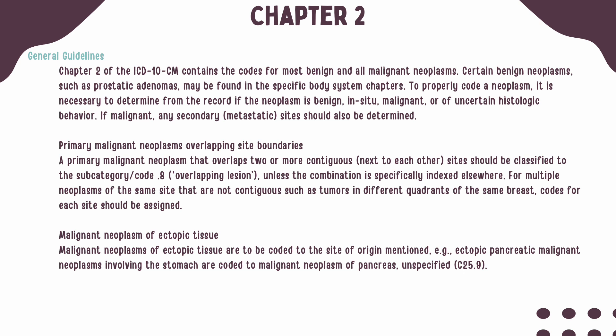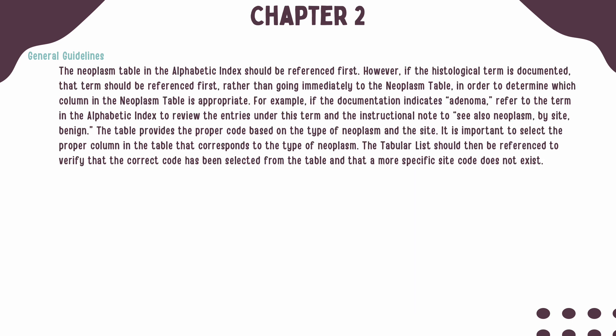When a malignancy is primary and it overlaps two or more neighboring sites, subcategory 0.8 should be used to indicate overlapping lesions are present. If multiple neoplasms are present at the same site and do not have overlapping borders, such as tumors in different quadrants of the breasts, a code for each site should be assigned. If malignant neoplasms of ectopic tissue are present, they should be coded to the site of origin that is mentioned. The table of neoplasms should be referenced first unless a histological term is documented, in which case that term should be referenced prior to checking the table of neoplasms. In the index, your main term will have an instructional note indicating what behavior you should use in the neoplasm table.